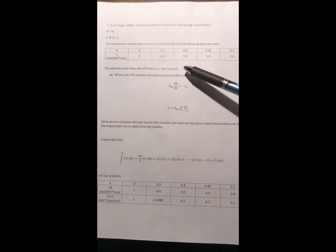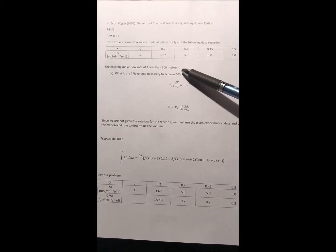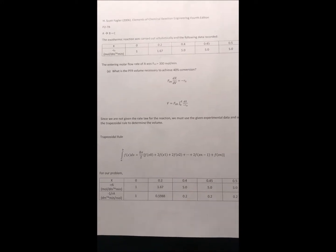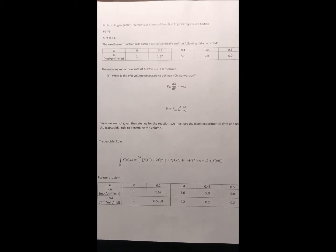We are also given that the entering molar flow rate of A is 300 moles per minute. So for part A it's asking what is the PFR volume necessary to achieve forty percent conversion.